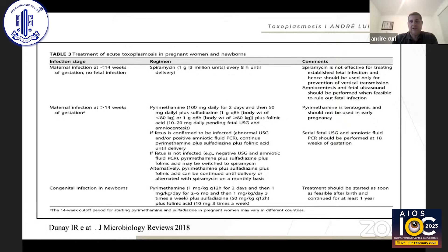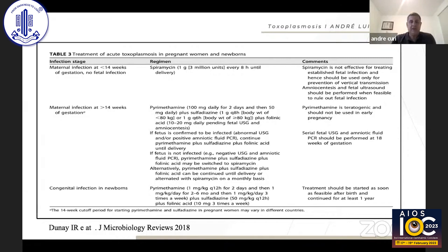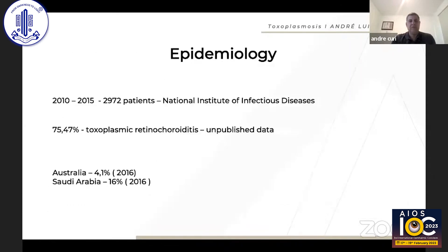These patients need treatment not only because of the congenital disease but specifically because of the eye. All children with congenital toxo must be treated for one year with specific treatment to avoid neurological impairment and ocular involvement.